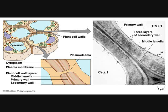The intercellular junctions of a cell are the connections between neighboring cells that form tissues. In plants, the cell wall is rigid and makes it hard to join the cells together. Due to this, the cell wall has channels in them called plasmodesmata.